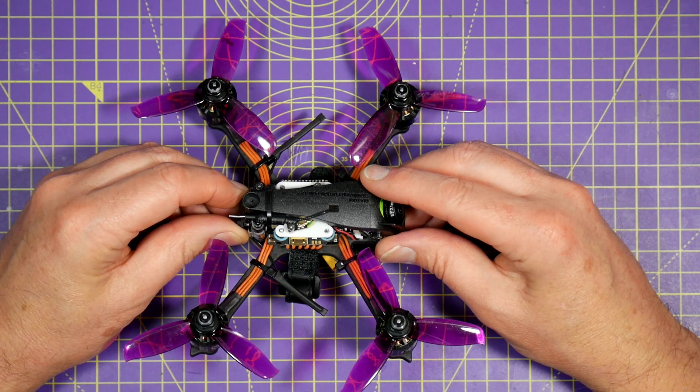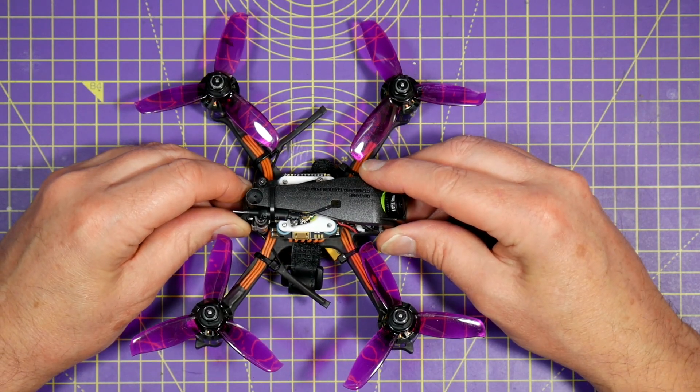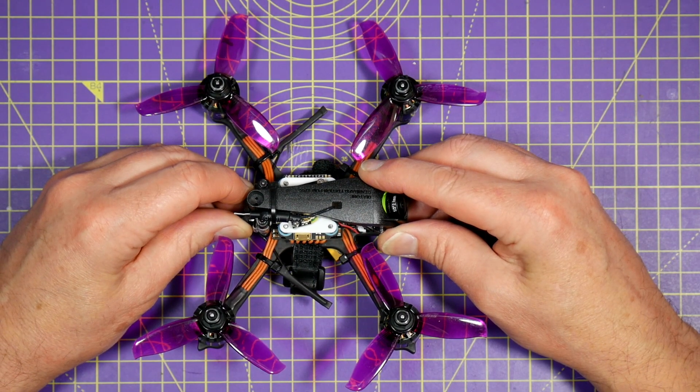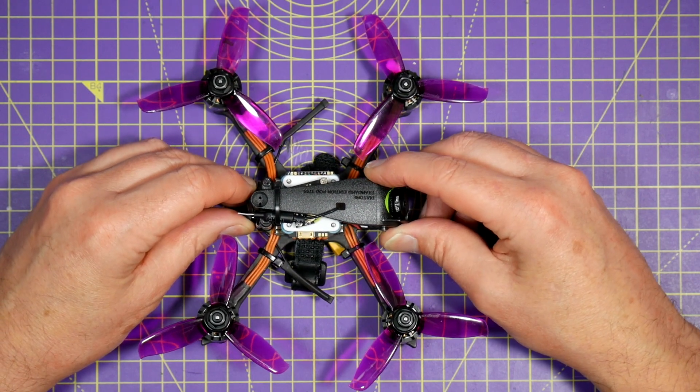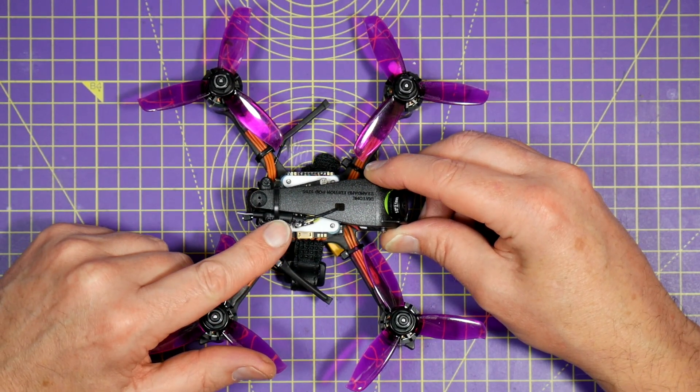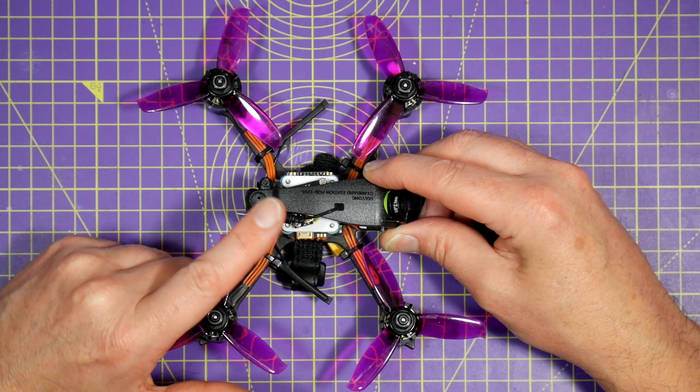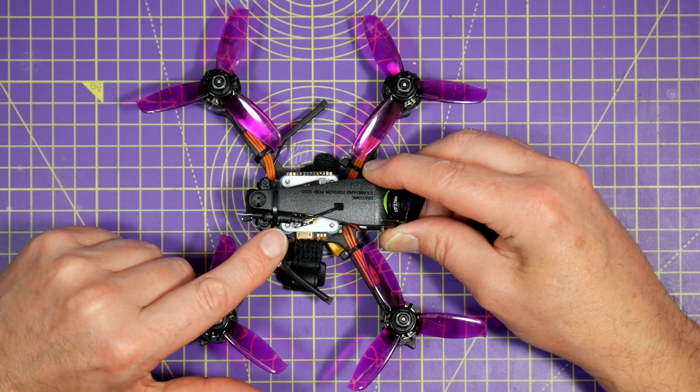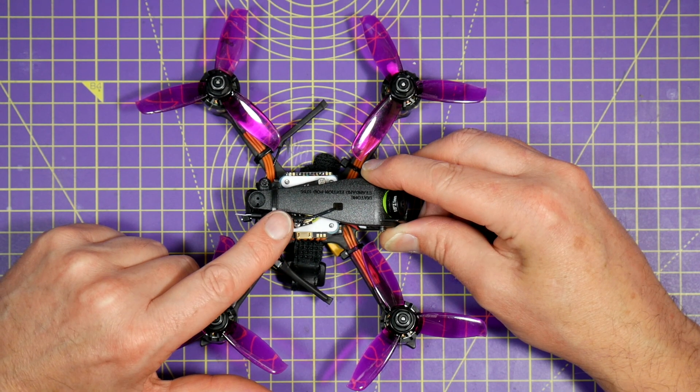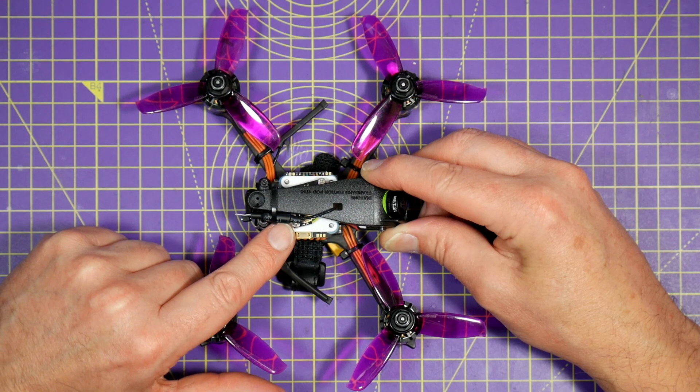The awesome Diatone R349 and R349 HD use a very simple dipole VTX antenna. This actually works surprisingly well because it's zip-tied to the side of the canopy, so it doesn't easily get damaged in a crash.